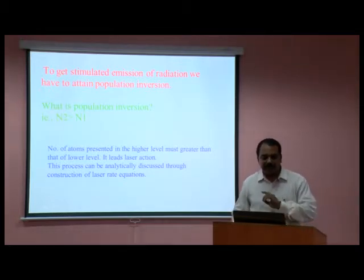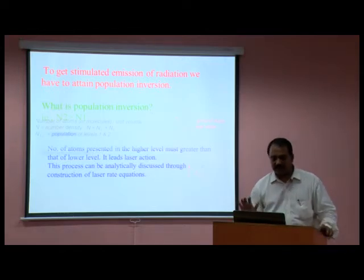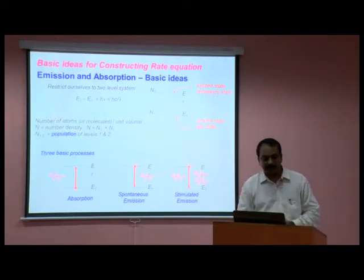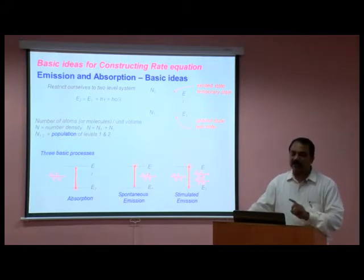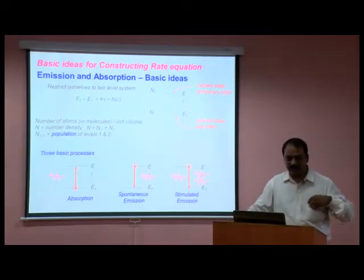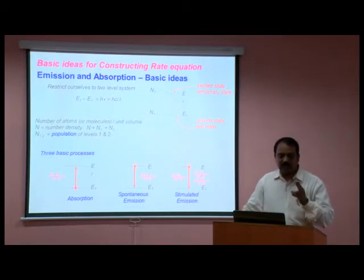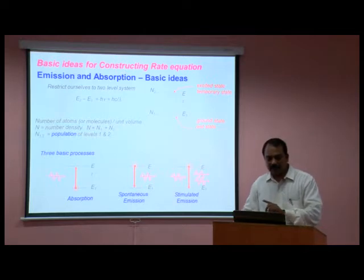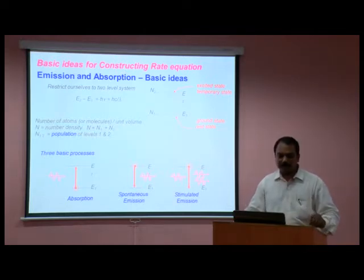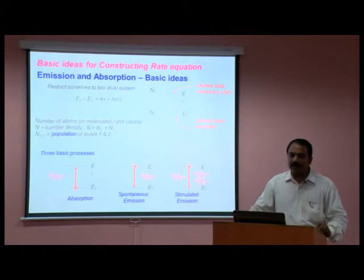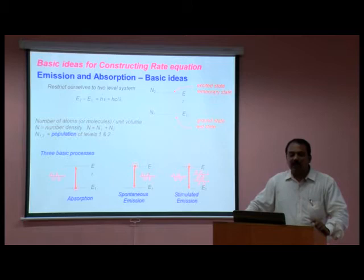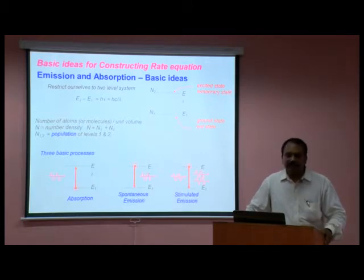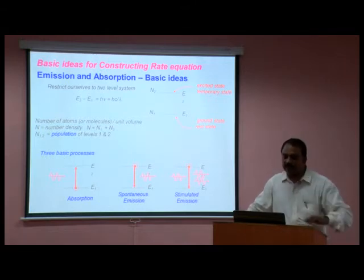This process can be analytically discussed through the construction of the laser rate equation. The basic idea for constructing a rate equation: first, there are processes of emission and absorption. For the first simple equation, whenever we are considering two energy levels, then according to Planck's, the difference of energy levels is equal to hν — we call this a quanta.